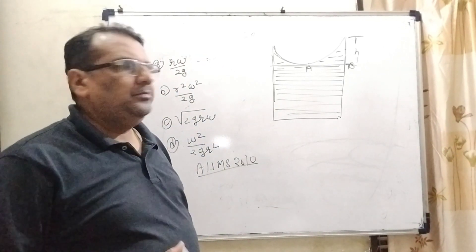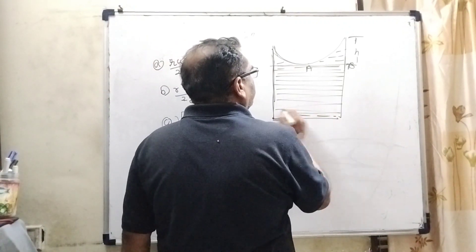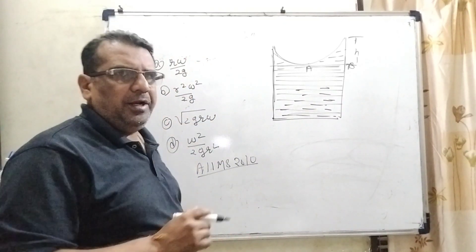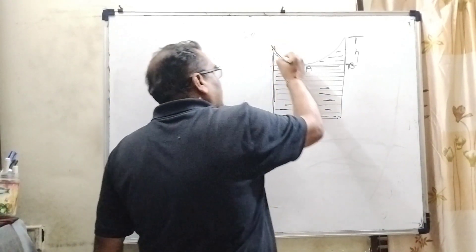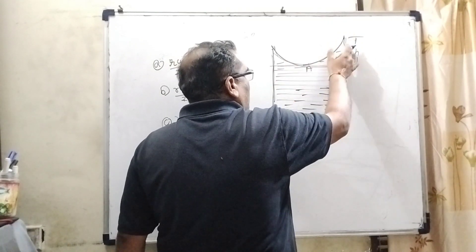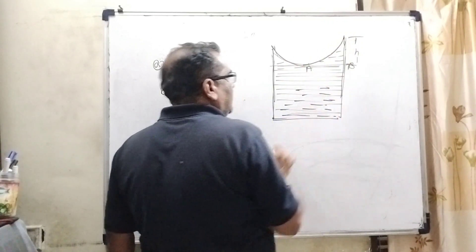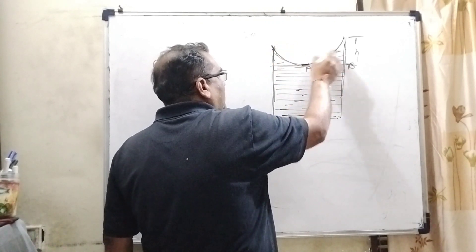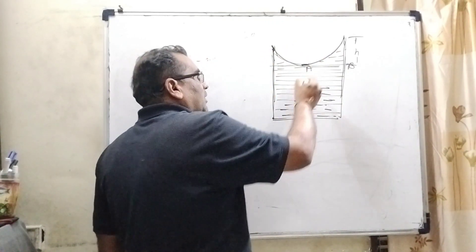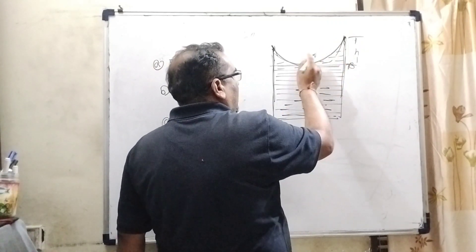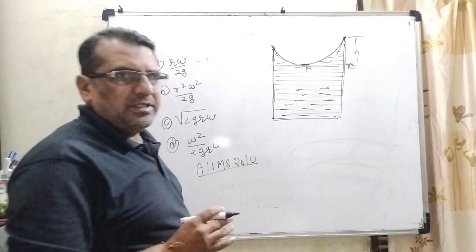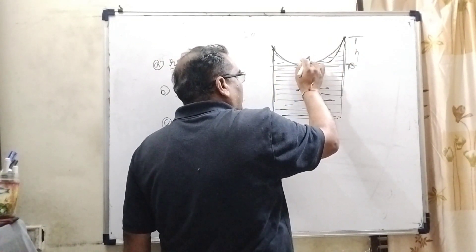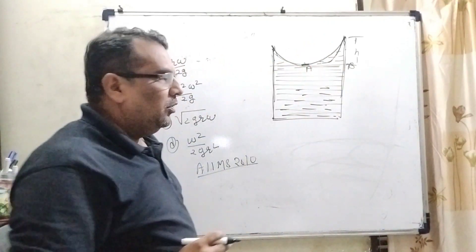Here we have given a vessel which contains water. When it rotates, the velocity increases at the sides or walls of the vessel. The pressure decreases at the sides of the vessel, so therefore the water level rises up at the edges. And exactly in the middle, to compensate, the level of water decreases.